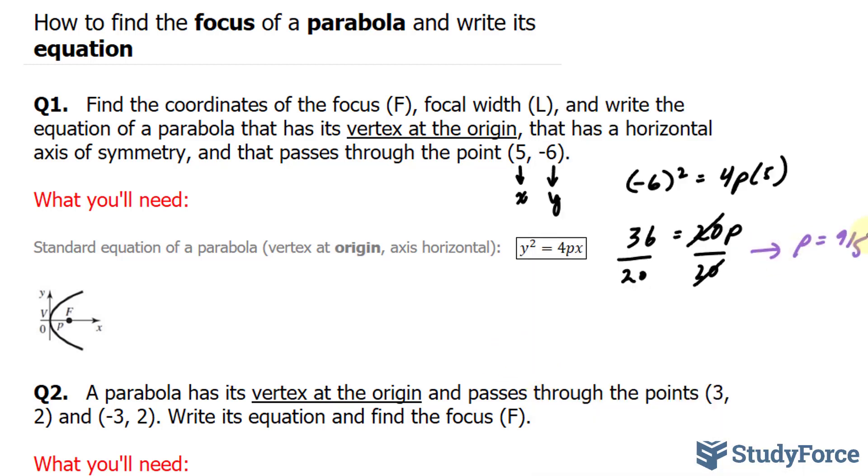Now that we have our p, we can find the focal width. And to find the focal width, we use the formula L = |4p|. 4 times p, which is 9 over 5, gives us 36 over 5. So, we found our focal width.